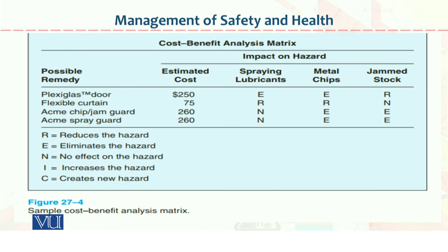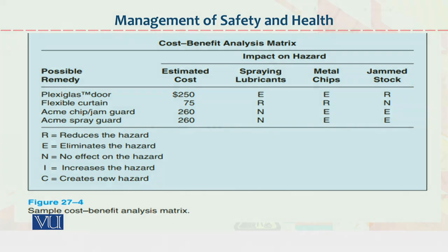The cost-benefit analysis matrix detail includes: estimated cost, spraying lubricant, metal chip, and jam stock. Dear students, this pictorial representation that I have taught you — with its help we develop all these things in the organization.